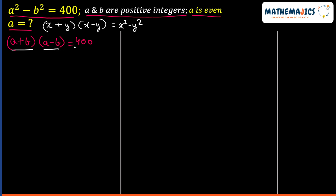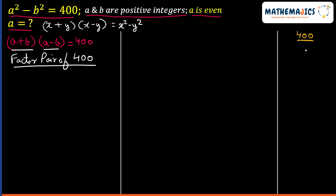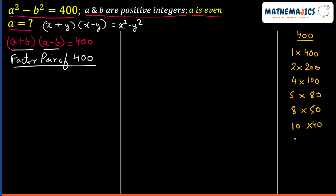These two brackets, when multiplied, give us 400. That means they form a factor pair of 400. So we need to find the factor pair that satisfies this equation. Let's write down all factor pairs of 400: 1×400, 2×200, 4×100, 5×80, 8×50, 10×40, 16×25, and 20×20.